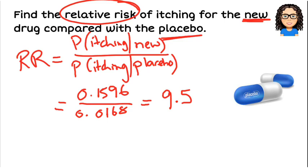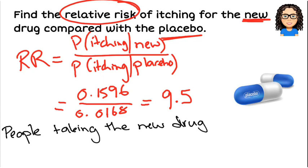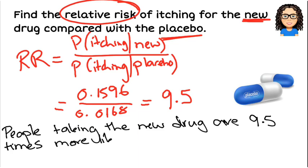Now we need to interpret this and say what it means. We have the relative risk that somebody is going to itch if they take the new drug compared with the placebo. People taking the new drug — because that's the number on top — are 9.5 times more likely to itch compared with people taking the placebo. That phrase '9.5 times more likely' is the key wording to use when discussing relative risk.